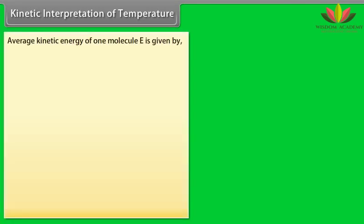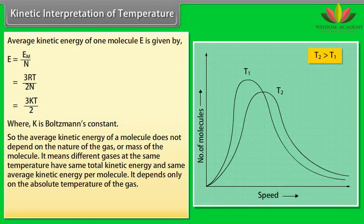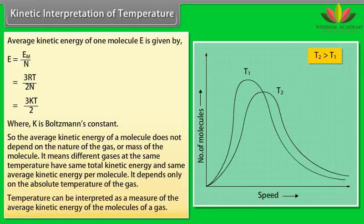Kinetic interpretation of temperature. Average kinetic energy of one molecule E is given by E is equal to Em upon N is equal to 3RT upon 2N is equal to 3KT by 2, where K is Boltzmann's constant. So the average kinetic energy of a molecule does not depend on the nature of the gas or mass of the molecule. It means different gases at the same temperature have same total kinetic energy and same average kinetic energy per molecule. It depends only on the absolute temperature of the gas. Temperature can be interpreted as a measure of the average kinetic energy of the molecules of a gas.